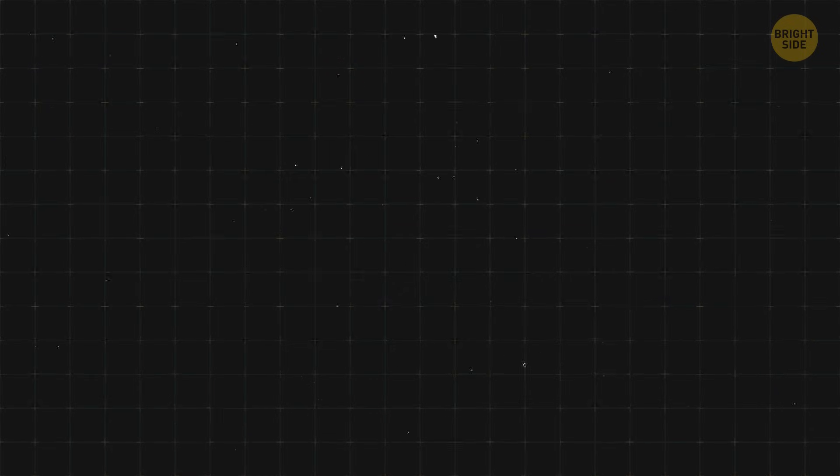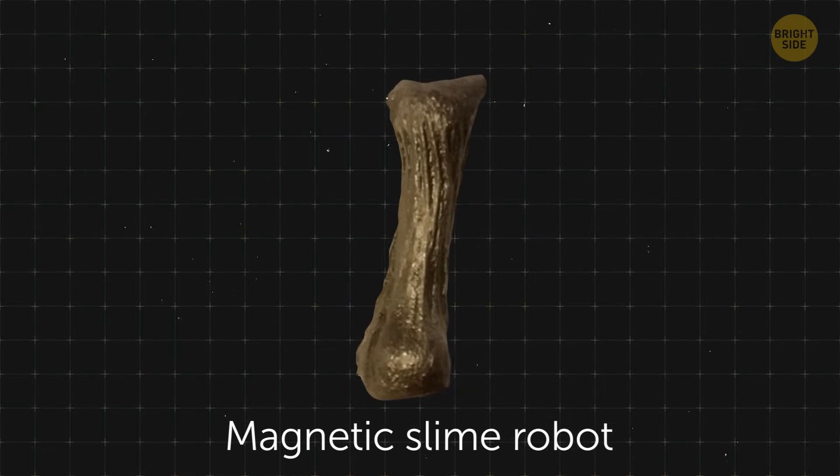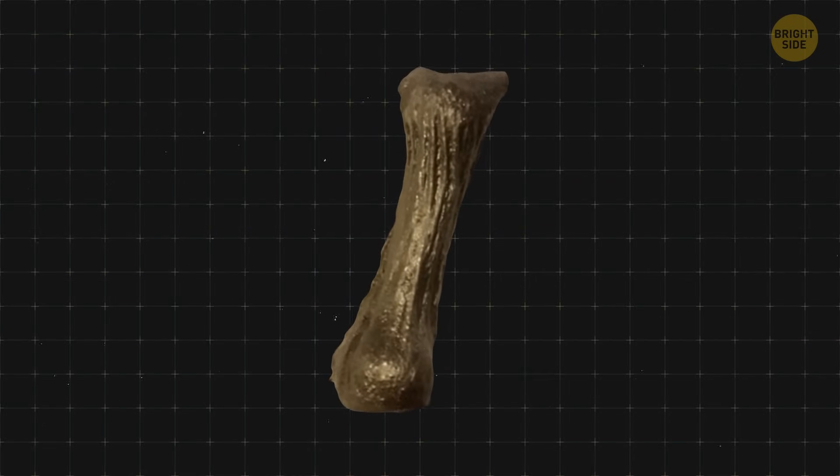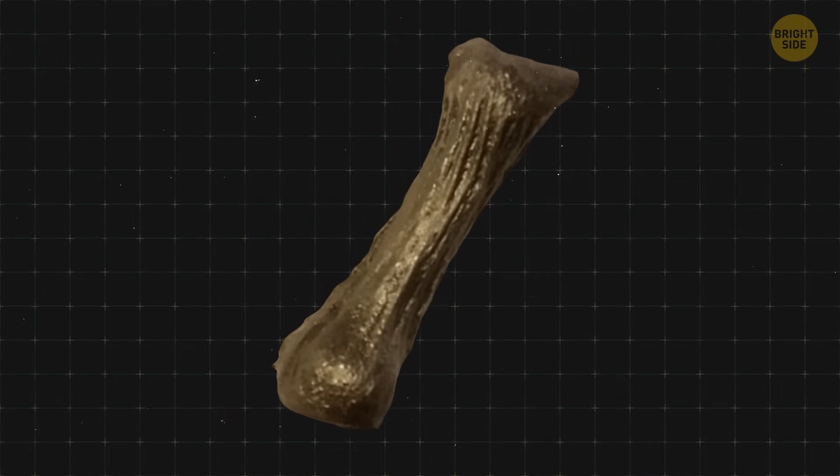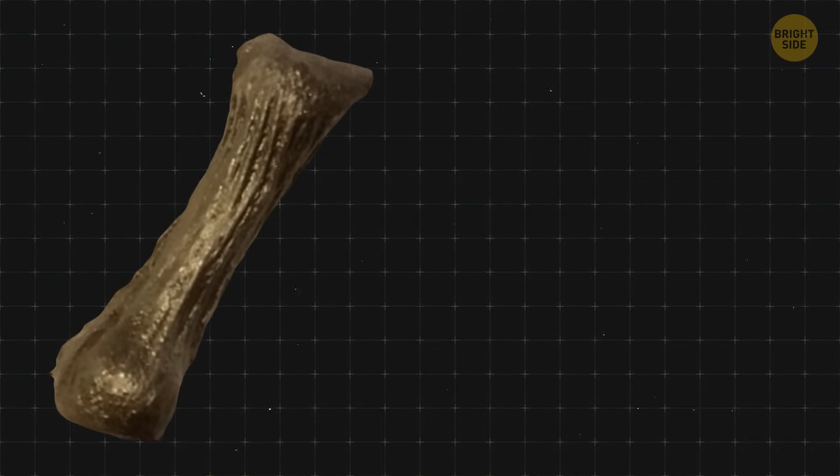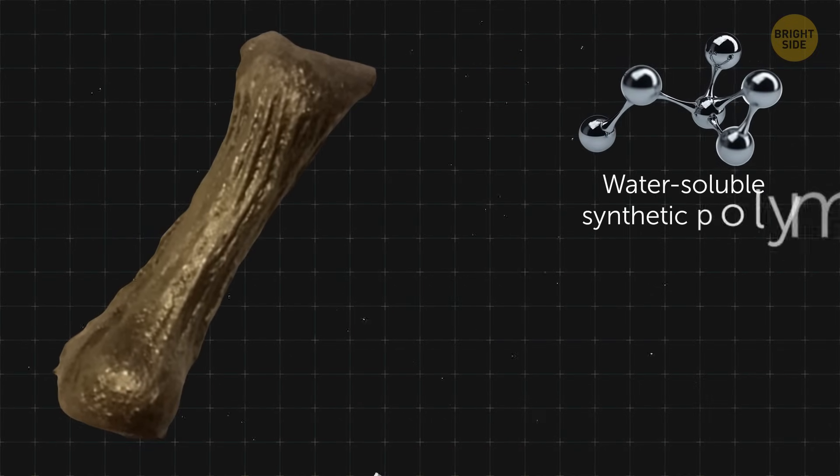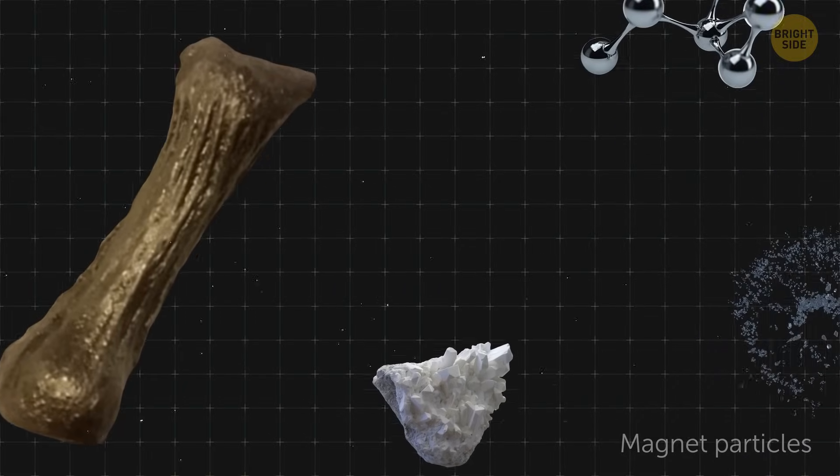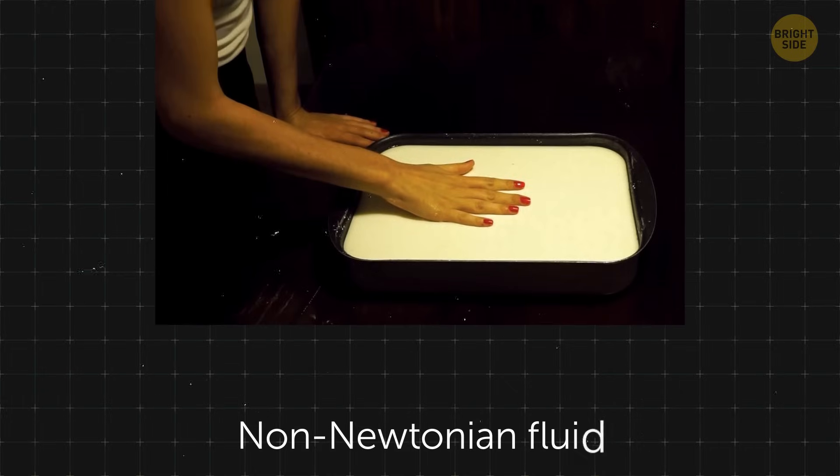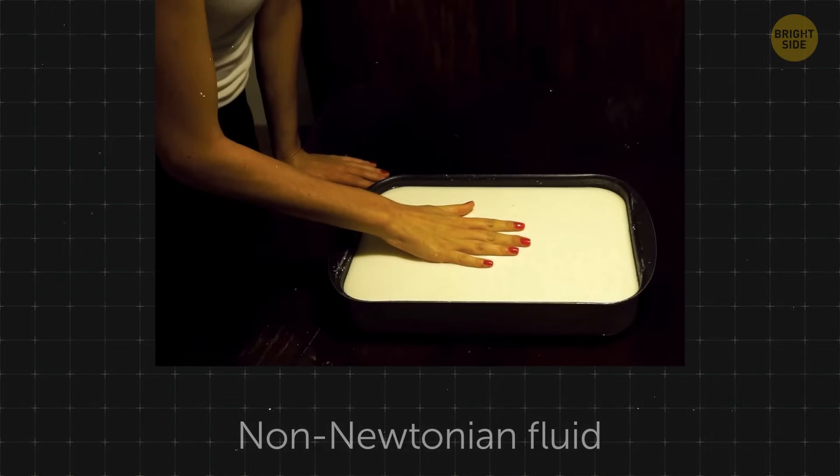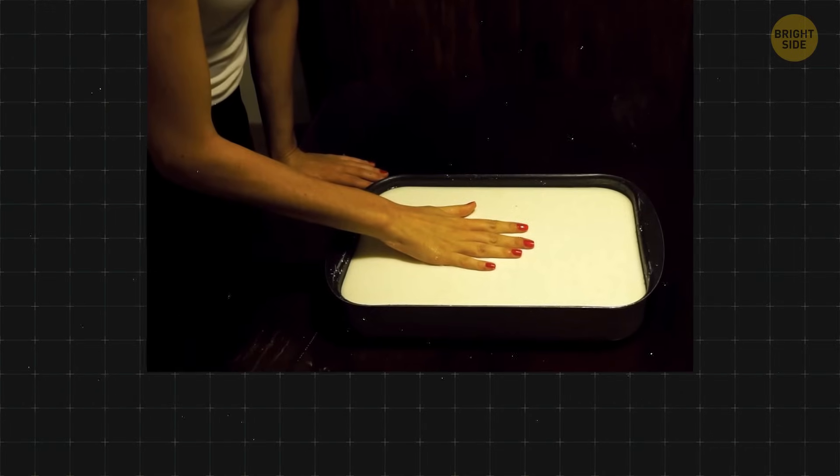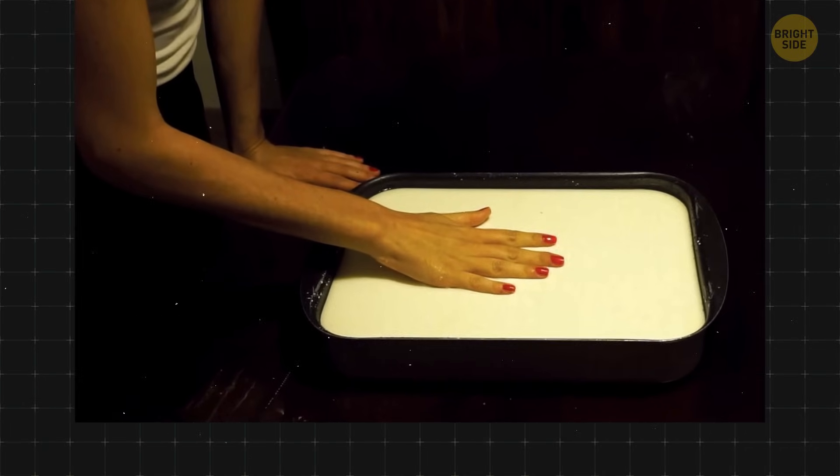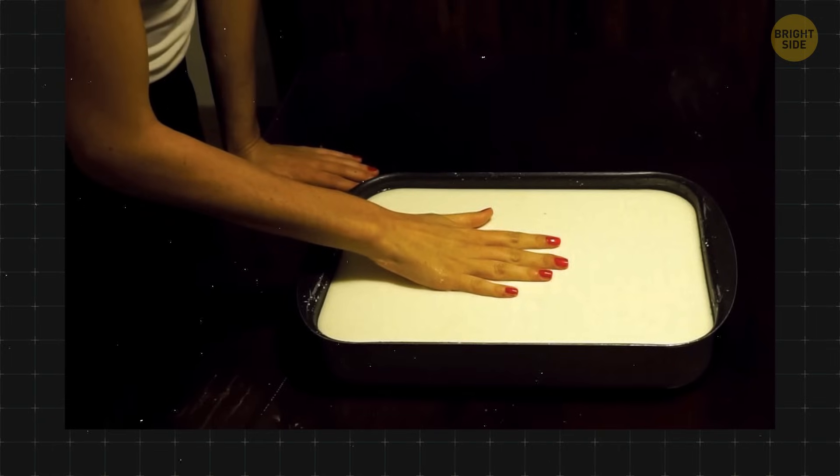This magnetic slime robot may look disgusting and frightening, but it definitely is game-changing. The blob-like robot is made of a water-soluble synthetic polymer, borax, and magnet particles. It is a non-Newtonian fluid that has viscoelastic properties, which means it can act both as a liquid and a solid, depending on the level of pressure that's being applied to it.